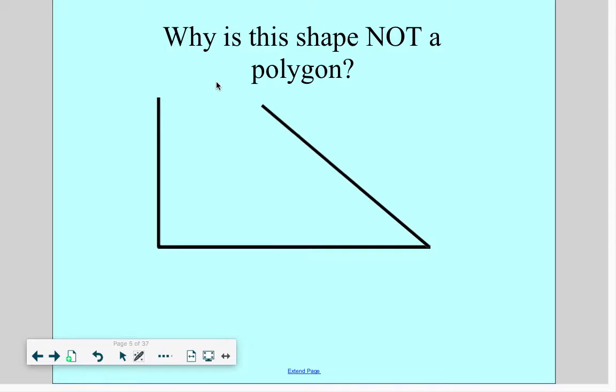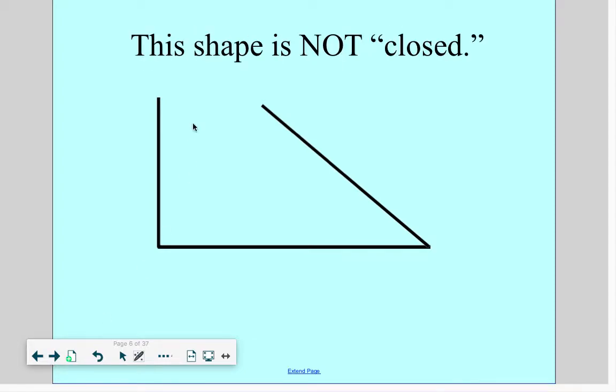Why is this shape not a polygon? Well, the first thing that attracts me when I look at this shape is this part right here. And you're right, there's nothing there. That's what draws my attention. Because this shape is not closed. It's open. If there is an open shape, it is not a polygon.